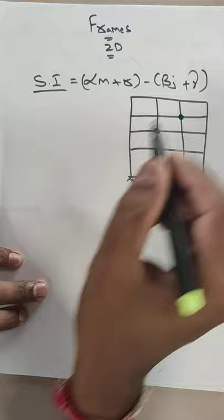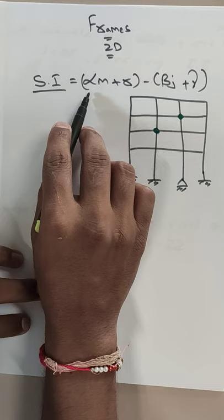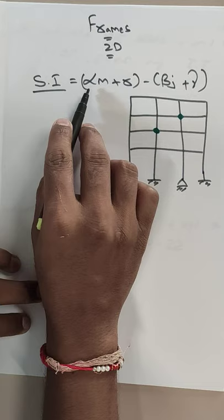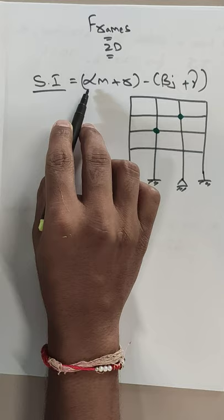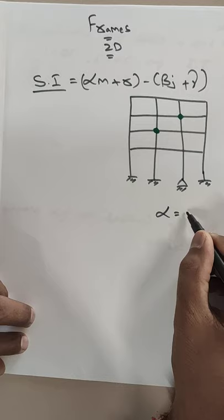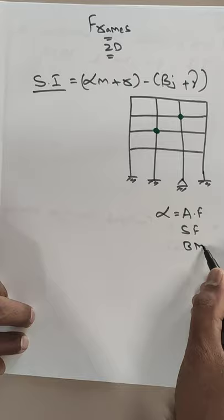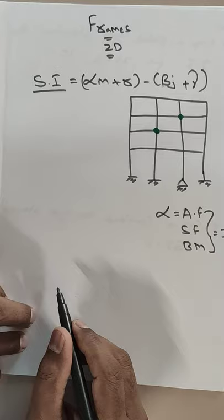Alpha is the number of actions available in each and every member. We will have 3 actions: axial force, shear force, and bending moment. So alpha value is equal to 3. Now let us look at m, which is the number of members.